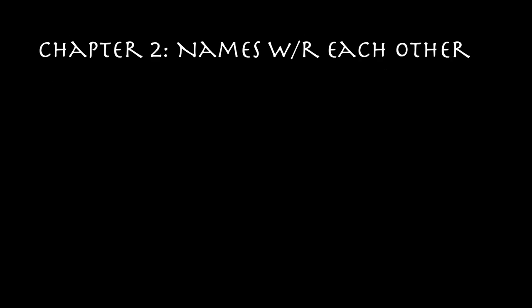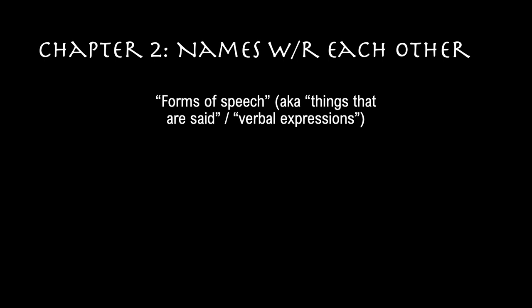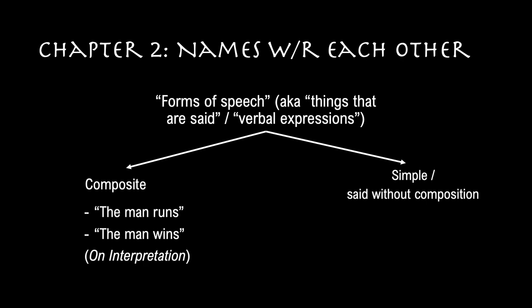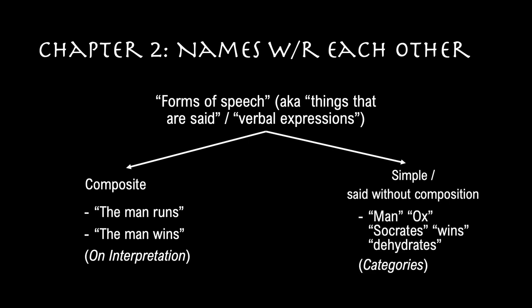In chapter two of the Categories, Aristotle discusses names and their relationships to each other. First, he divides forms of speech into two kinds: composite and simple. Composite forms of speech are things like 'the man runs' or 'the man wins' — studied in On Interpretation and other logical works. Simple forms of speech are names like man, ox, Socrates, wins, and dehydrates — these are what are studied in The Categories. From now on, we'll leave aside composite forms of speech and focus on simple ones, which can all loosely be called names.